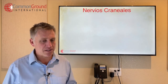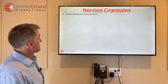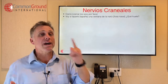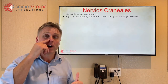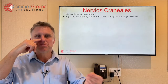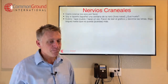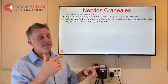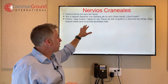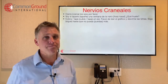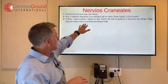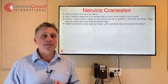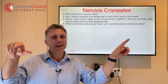Nervios craneales — cranial nerve tests and checks. Cierre los ojos, por favor — close your eyes. Voy a taparle una ventana de la nariz — or una fosa nasal. I'm going to plug one of your nostrils. ¿Qué huele? What do you smell? Cubra o tape un ojo — cover an eye. Favor de leer el gráfico y decirme las letras — please read the chart and tell me the letters. Siga hasta que no pueda más — keep going until you can't anymore. Míreme a los ojos, por favor. ¿En cuál lado está moviendo mi dedo? What side is my finger moving on?